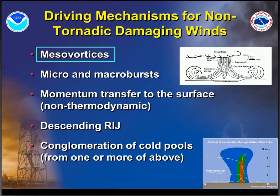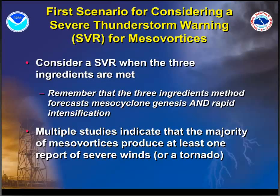One real quick point: obviously QLCS squall lines can produce straight line winds from mechanisms besides mesovortices. We're going to be strictly focusing on mesovortices, but as we all know, there are many other mechanisms that could put down damaging straight line winds within a squall line. Moving into the severe thunderstorm warning scenarios — I do want to emphasize this is just guidance. There are a lot of other factors that can come into play, but this is what we've found in our office using a lot of the research that's out there, and it seems to work very well.